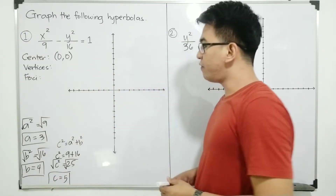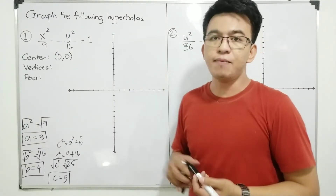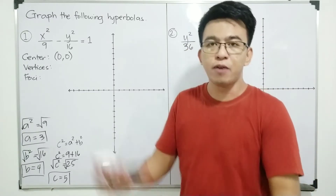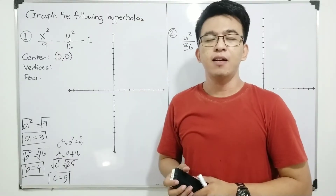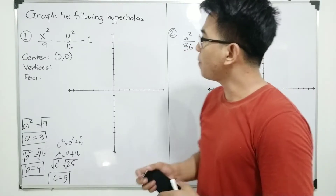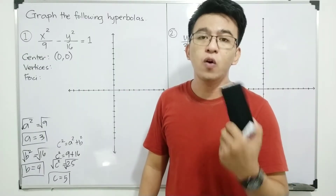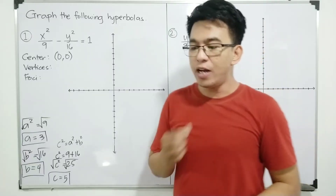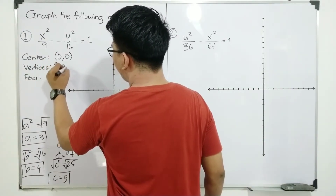Now, how can we identify the coordinates of the vertices and foci given the values of a, b, and c? The next step is to know the orientation of our hyperbola — is it vertical, where the opening is up or down, or is it horizontal, where the opening goes left and right? If your x variable is the positive term, your hyperbola opens to the left and right — in other words, the orientation is horizontal. For the vertices in this case, the pattern is (±a, 0).